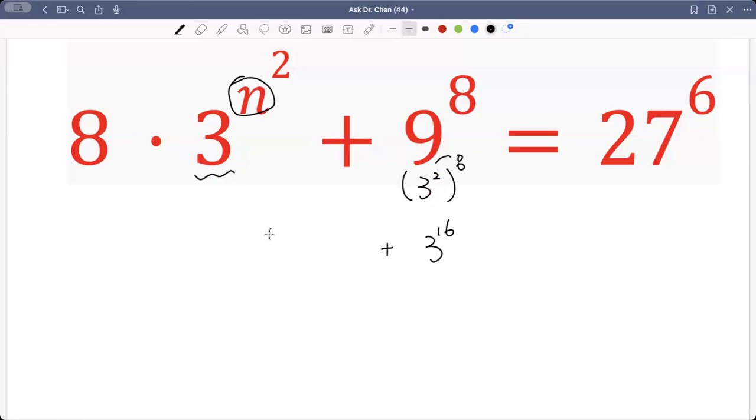The first term we don't change, we just keep as 8 multiplied by 3 raised by n squared. Then 27 is 3 cubed. So 3 cubed raised by 6, multiplying 3 times 6 is 18. So we can write as 3 raised by 18.